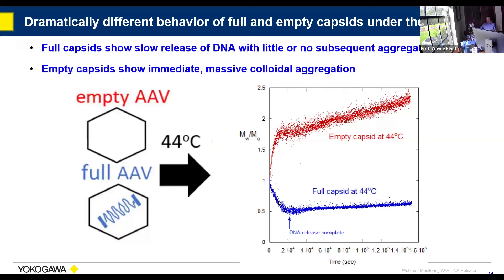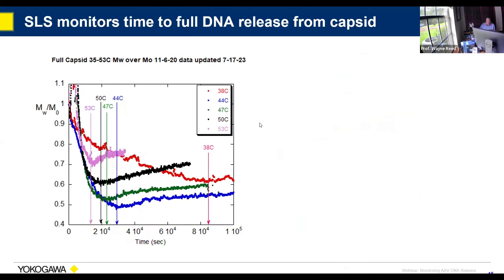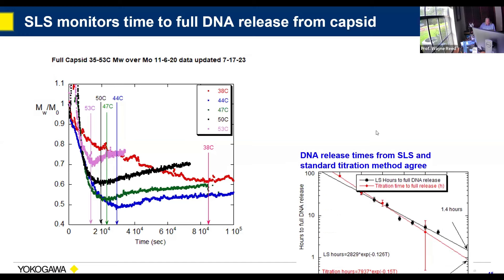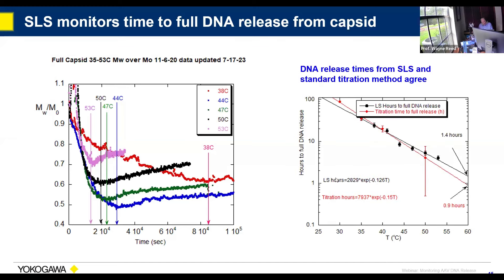Startlingly, if capsids are full — and we had 60% full in the study, so there are empties mixed in — at 44°C the scatter actually goes down. We linked this to the ejection of DNA from the full AAV capsids. It's fairly slow: about 20,000 seconds, on the order of six hours, to come completely out. Subsequently there's some aggregation, but it's very low compared to the initial colloidal aggregation. By doing this at different temperatures and looking at the minimum — which we say is the point of full DNA ejection — the hotter it is, the more quickly the DNA is fully released. We compared this to Spark Therapeutics' titer method and they agree quite well.